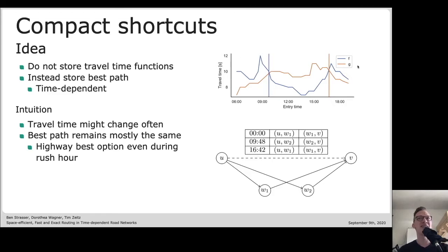We were thinking if we could apply that practical observation to find a different shortcut representation. So our idea is rather than storing those complex functions with many breakpoints, maybe we can just store those points in time where the best path changes. If we have a shortcut, rather than storing this travel time function, we want to store a table which tells us at which point in time the shortcut expands to which of these lower triangles. Then we tried implementing that idea and performed lots of engineering work.